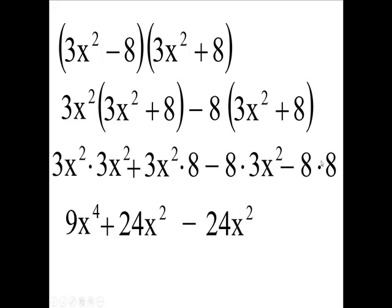And you end up with a minus and 8 times 8. So you end up with a 9x to the 4th. These two guys go away. You'll have a minus and the square of 8 which is 64. This is the difference of two squares.